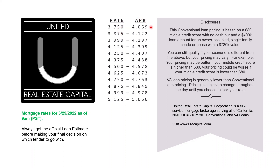The second way the APR can be used is to determine which advertised rate will save you more money in the long run. If you look at this APR of 4.069 compared to 4.978, the 4.069 APR is lower. That means over 30 years, even though the closing costs are higher, because the APR is lower it will save you more money over 30 years.